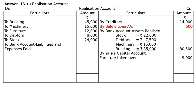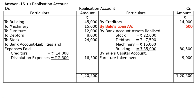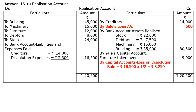On the debit side, To Bank Account for liabilities and expenses paid: expenses for dissolution Rs. 2,500, and creditors will be paid in full Rs. 14,000. Total Rs. 16,500. The debit side total is Rs. 1,20,500. Take it to the credit side and find the gap — By Capital Account, loss on dissolution. They are equal partners, so the difference of Rs. 16,500 is split: Bale gets Rs. 8,250 and Yale gets Rs. 8,250 each.